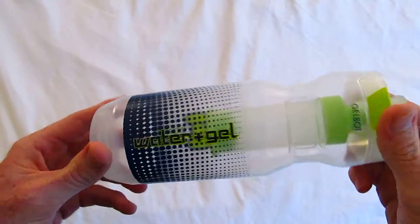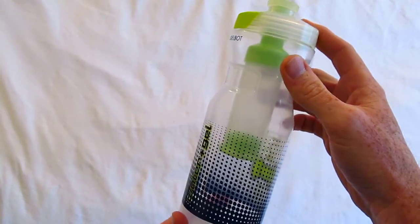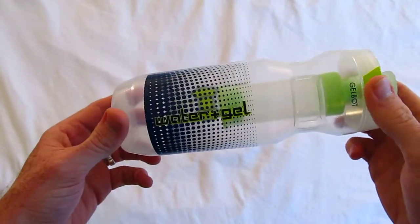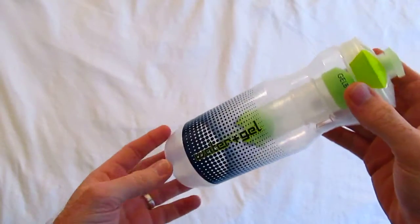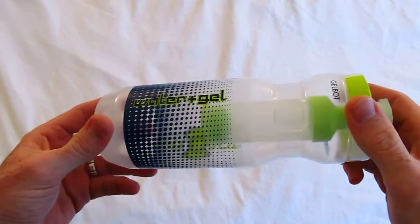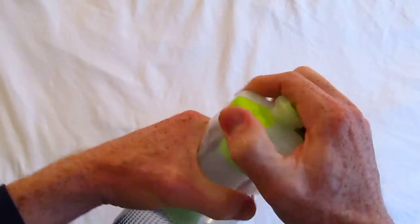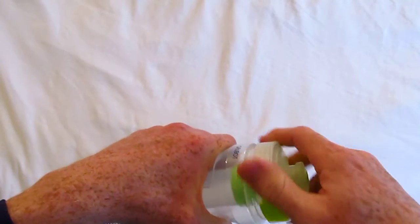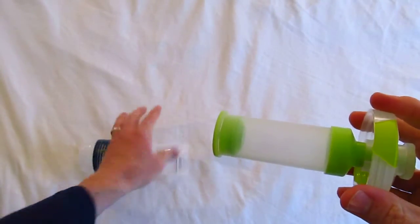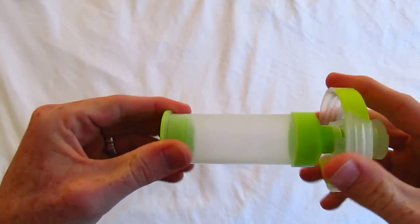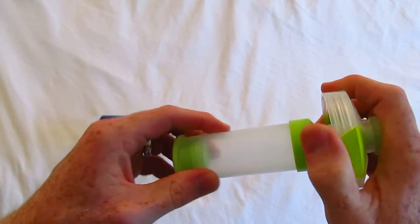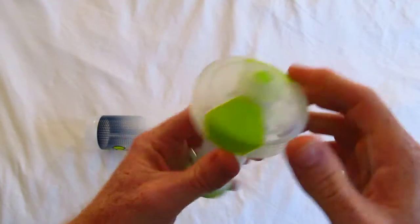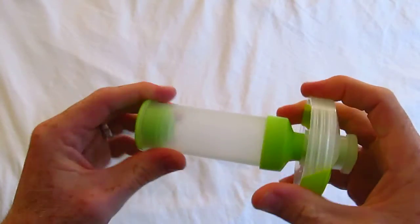This is a 20 ounce water bottle. It retails for $13.99. You can also get it in a 24 ounce for just a dollar more. And it holds, in the center console here, 2.3 ounces of gel. That's the equivalent of about two, maybe two and a half gels in here. Let me show you a little bit about how it works.